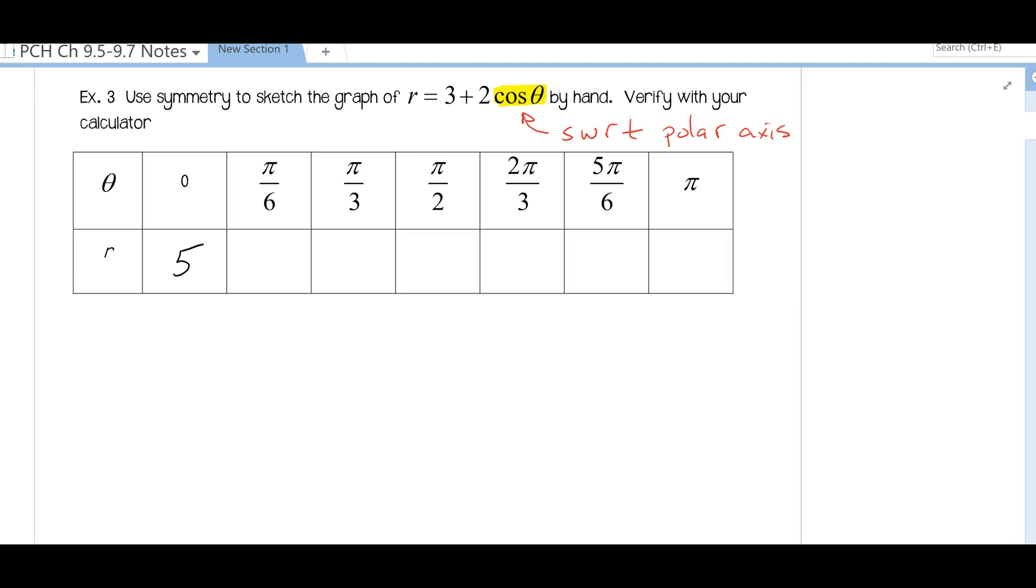Since we are going to be graphing these, we're going to be using decimal equivalents, so you could use your calculator for these as well. For pi over six we're going to have three plus two times square root of three over two. That's going to give us about 4.73. For pi over three we're going to have three plus two times one-half, so that's going to give us four.